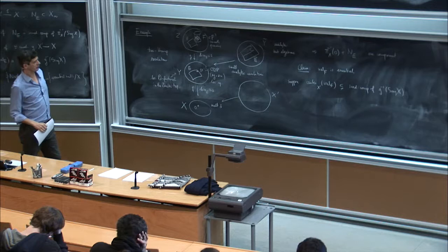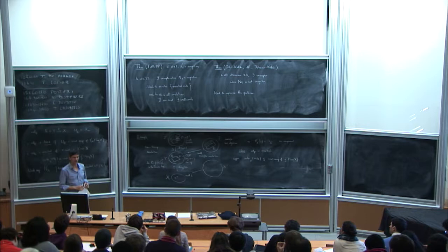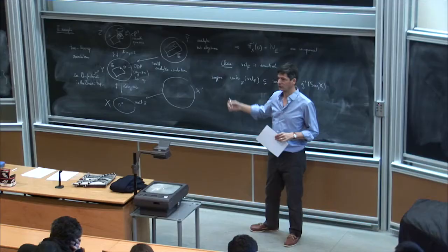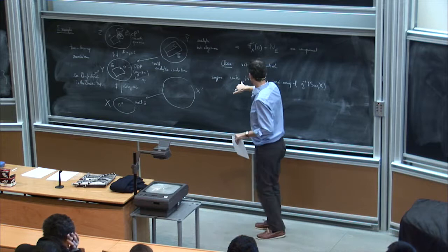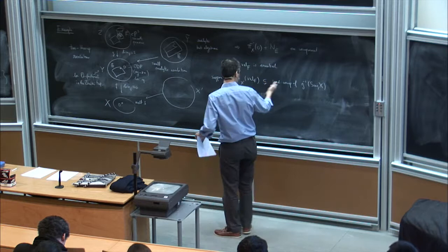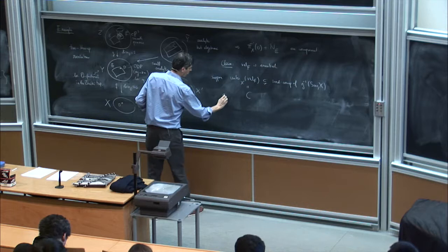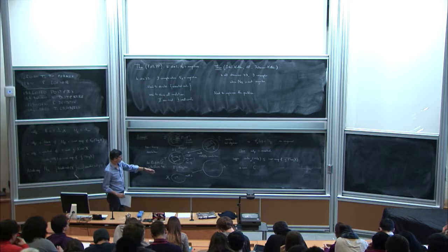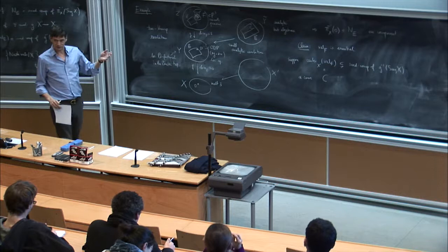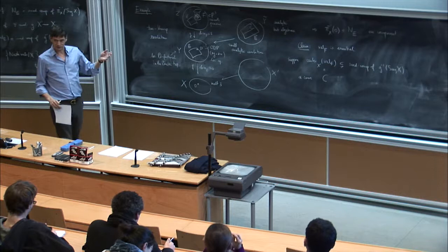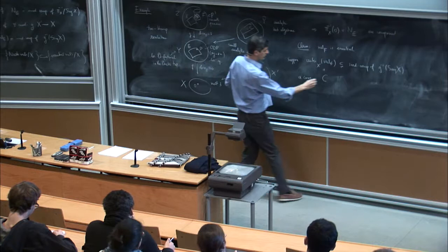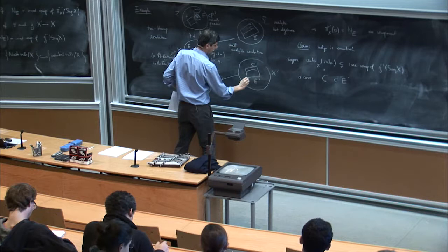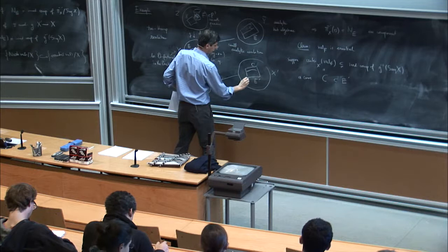The discrepancy computation — essentially the vanishing order of the Jacobian of the map — says something about the size of the center. The center cannot be codimension two; it has to be at least a curve. But since it's strictly contained in something, it cannot be more than a curve, so it must be a curve C. By the Jacobian formula, the only divisor that can contain C must have discrepancy zero, and E is the only such divisor. So C must be contained inside the proper transform of E.